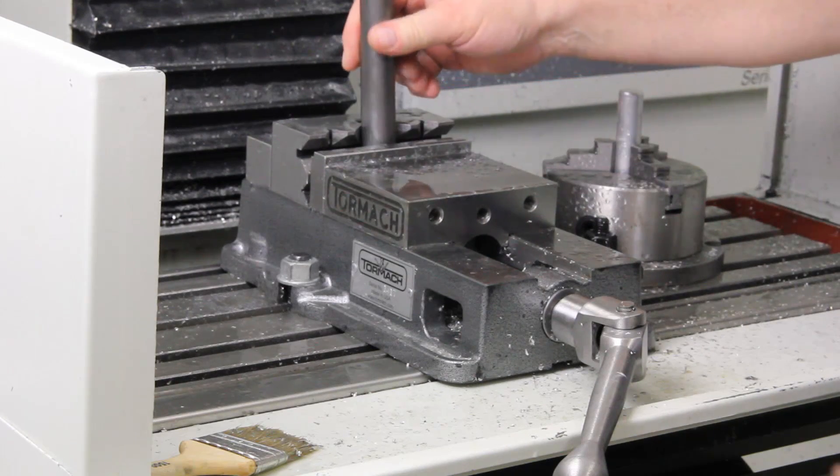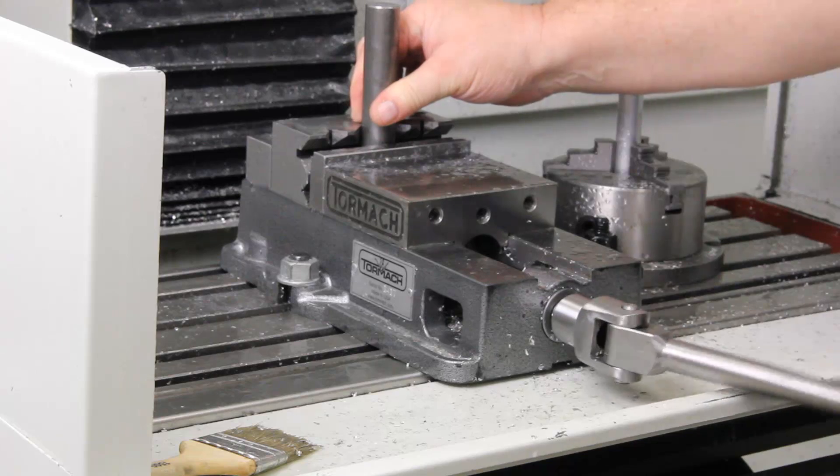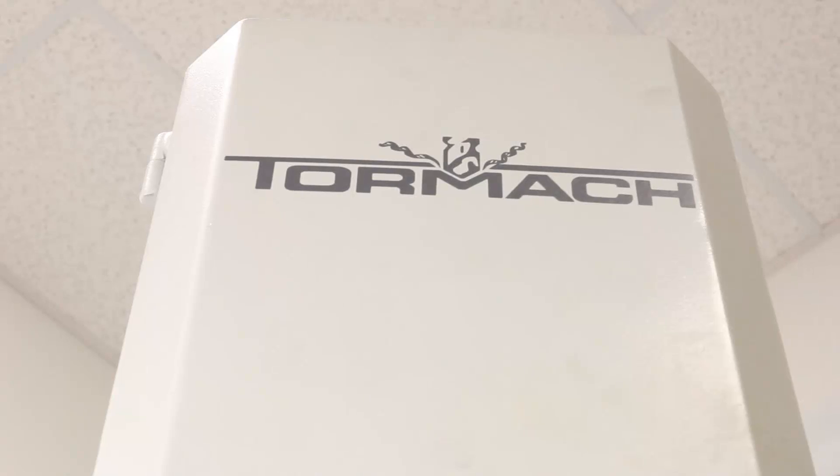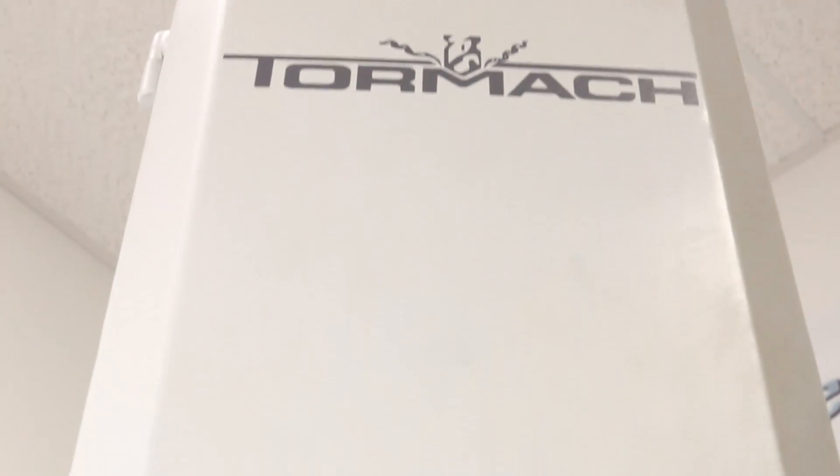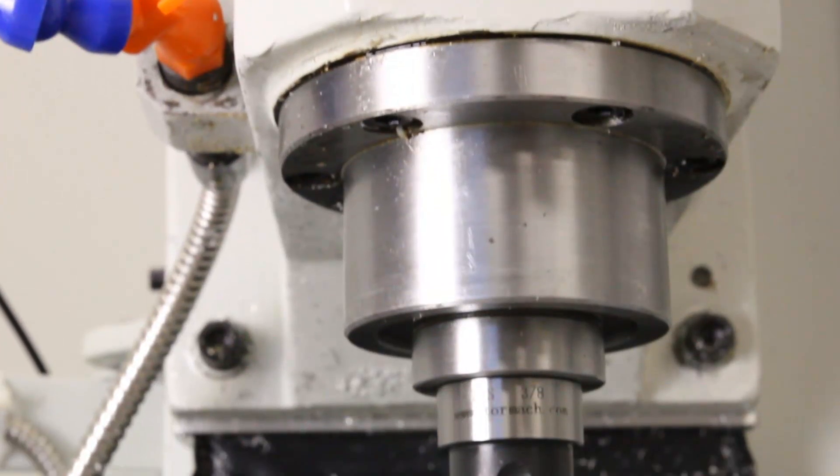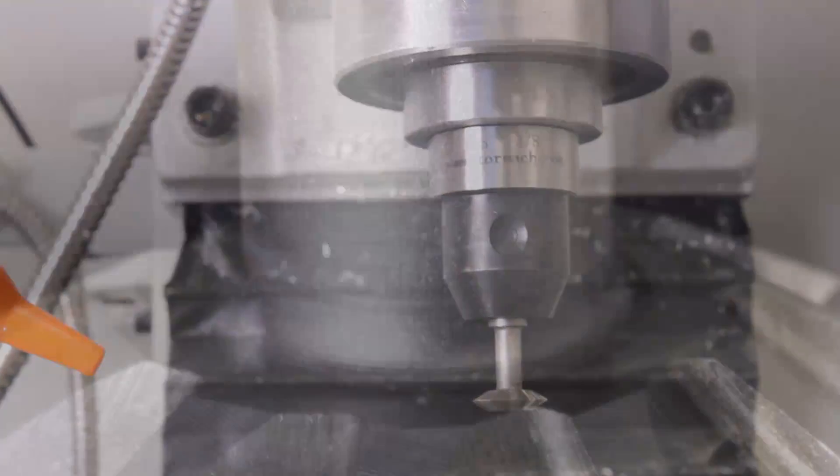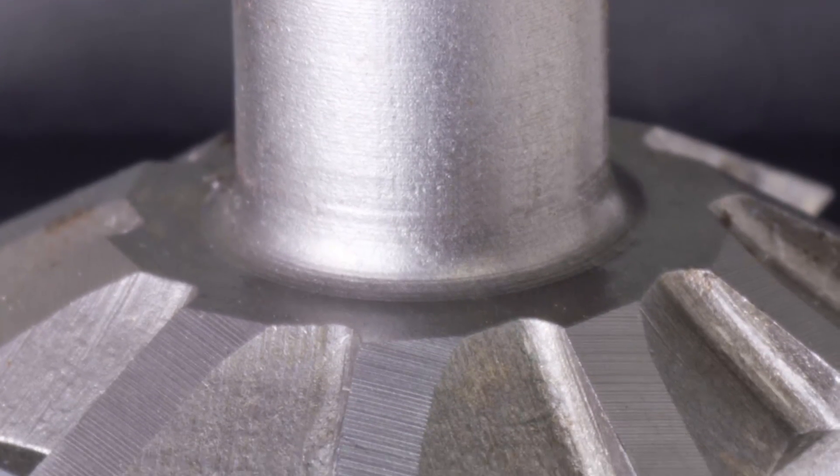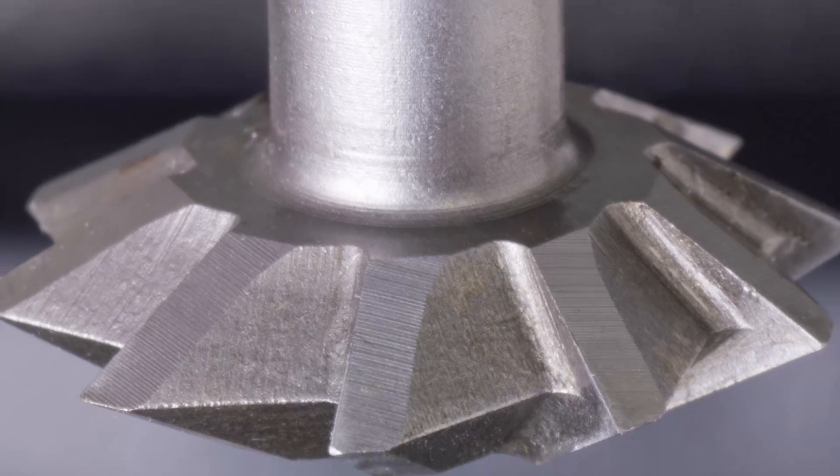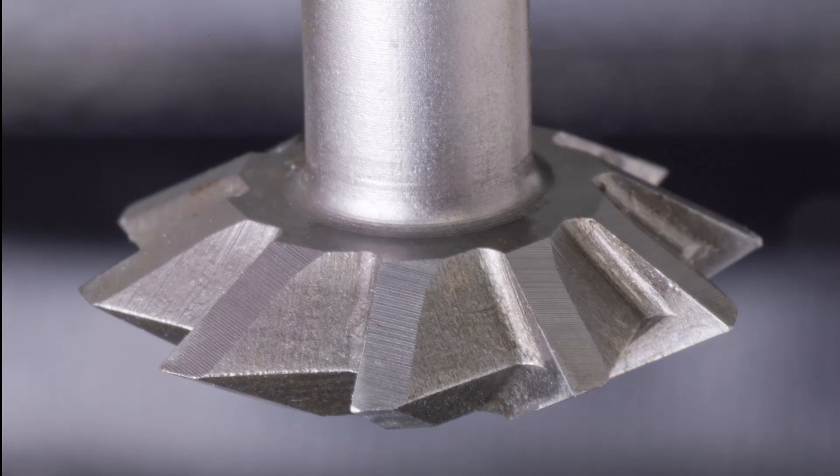We're going to demonstrate some basic CNC thread milling on both steel and aluminum bar on the Tormach PCNC 1100. For both of these cuts we will be using a 60 degree v-slot cutter. This particular cutter has 10 flutes and a 1 inch reach.